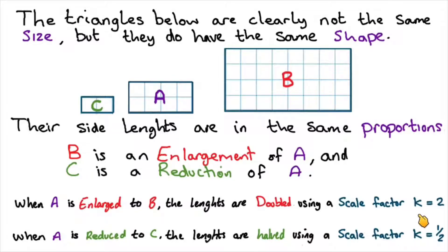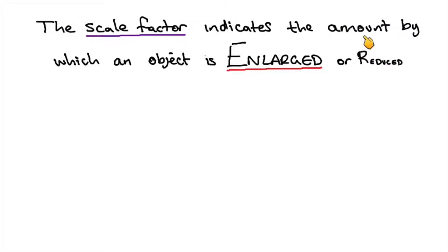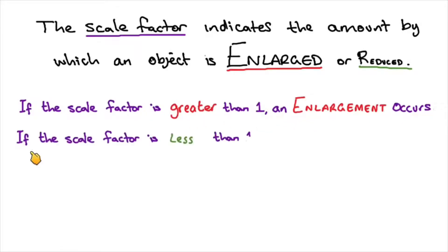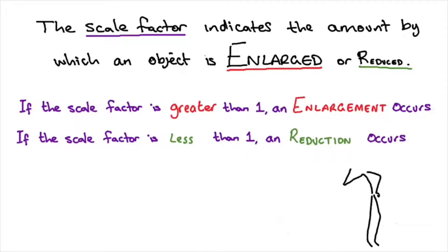Don't be too concerned about the constant of proportionality, this value of K. All you need to know is the scale factor — whether it's an enlargement or a reduction. We refer to it as a scale factor. If the scale factor is less than 1, a reduction occurs. Make sure you pause the video here and copy those notes into your book or wherever you're making your revision notes.